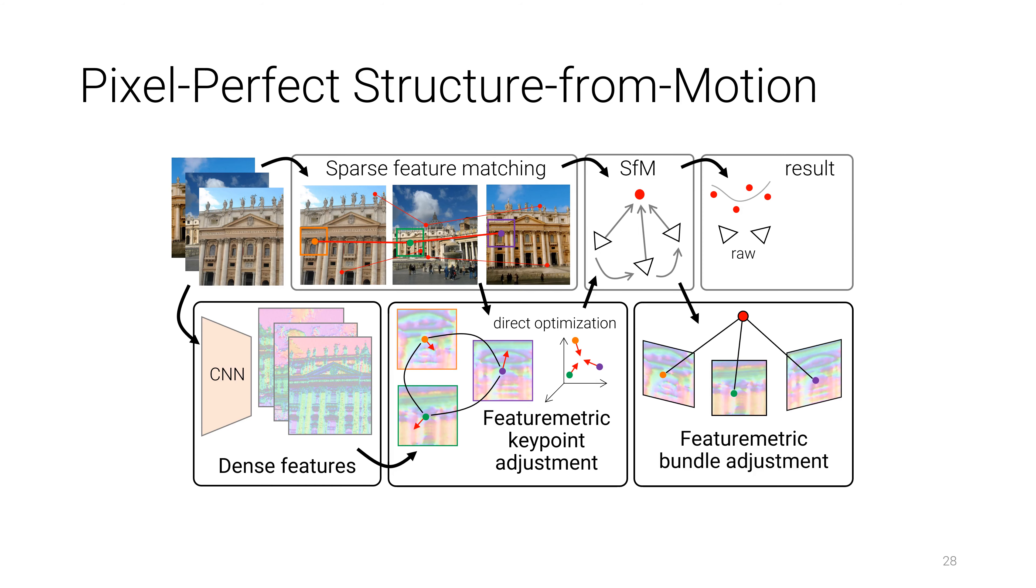In featuremetric bundle adjustment, we propose to refine both poses and 3D structure globally using the same deep features. This direct optimization pipeline improves both accuracy and completeness of 3D models.